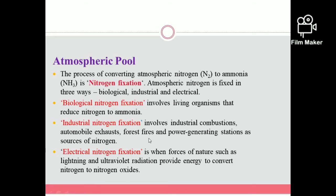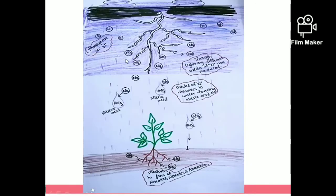Electrical nitrogen fixation is quite interesting. It occurs through natural forces — that is, lightning and ultraviolet radiations. During rainfall, lightning occurs and the nitrogen in the atmosphere reacts, forming nitrogen oxides. These nitrogen oxides dissolve in water to form nitric acid. The nitric acid then reacts with alkaline materials in the soil to form alkaline salts like calcium nitrate. This process is called electrical nitrogen fixation.